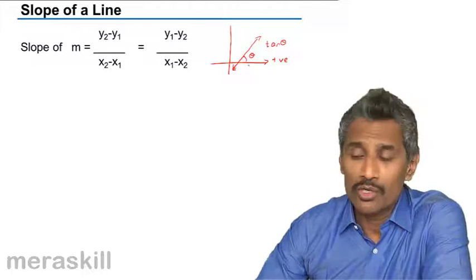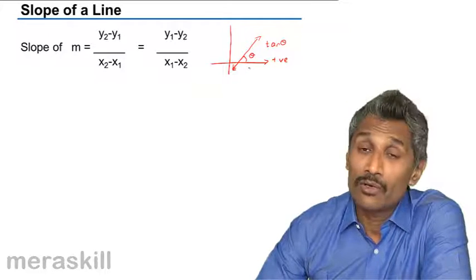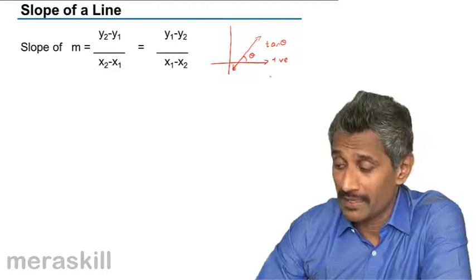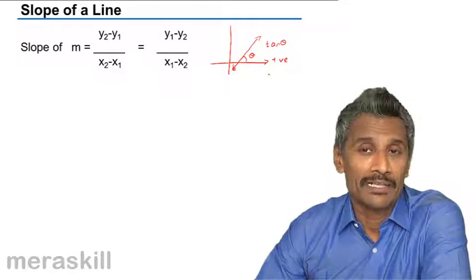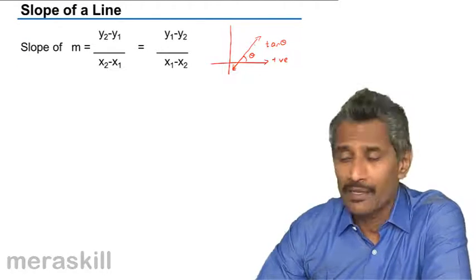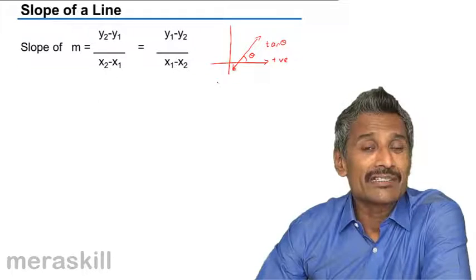However, more often than not, you may not be given this particular angle or there's no way to find it. In that case, how do you find the slope? Remember, slope of a line is a constant. We need to pick any two points.